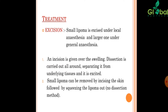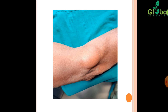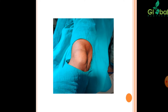Treatment: small lipomas are excised under local anesthesia and larger ones under general anesthesia. An incision is made over the swelling; dissection is carried out all around, separating it from underlying tissues, and it is excised. Small lipomas can be removed by incising the skin and squeezing the lipoma out — the no-dissection method. This picture shows an angiolipoma from our OPD.